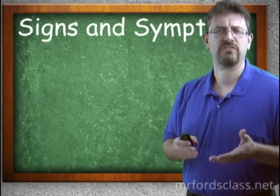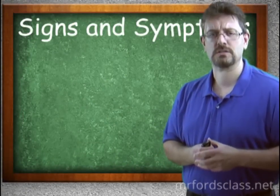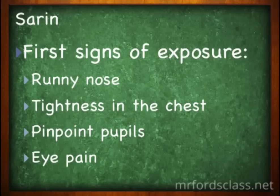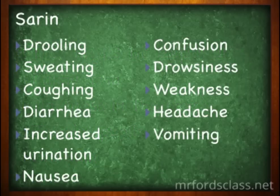The first signs of sarin exposure are a runny nose — just like other nerve agents — tightness in the chest, pinpoint pupils where the black opening of the eye gets really small, and eye pain. Victims will then experience drooling, sweating, coughing, chest pain, diarrhea, increased urination, confusion, drowsiness, weakness, headache, nausea, and vomiting.